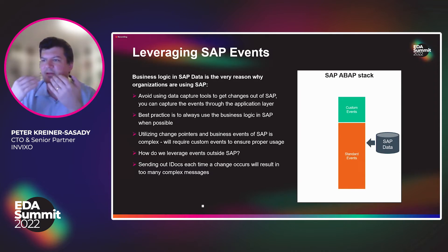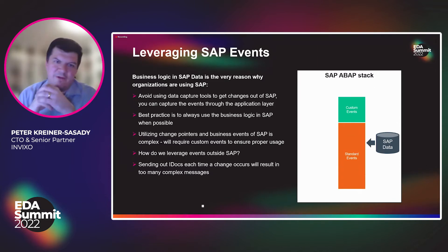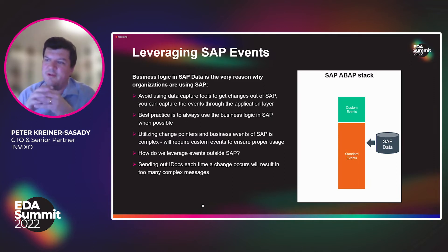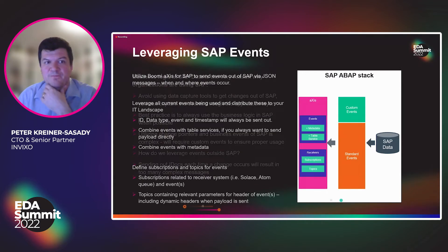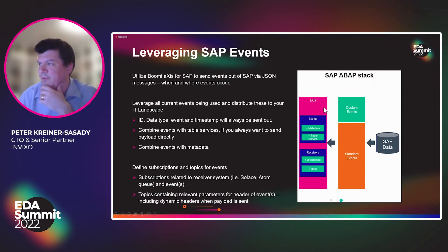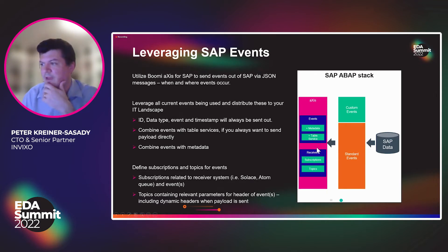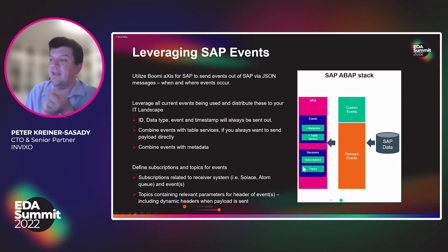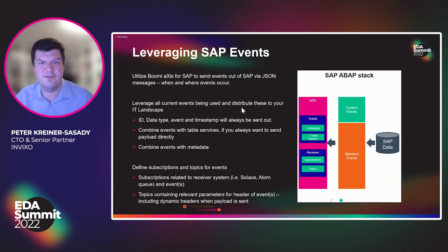We're able to utilize the change pointers and business events of SAP in a very simple way, instead of using custom events or hard-coded logic. We don't want to use IDOCs either, because IDOCs are very complex and have a lot of fields — not all of which we necessarily need. Instead, we send all these events out to our access tool, either with metadata including before and after values, or with the payload from the table service. We can send this as a subscription to Solace directly, define topics, and send out relevant parameters including dynamic headers.